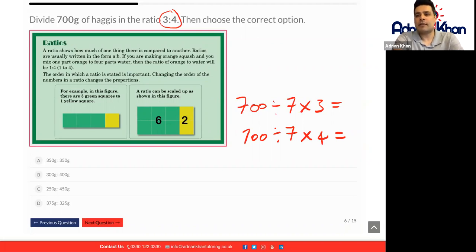So 700 divided by 7, which we know is 100, times by 3 is 300. 700 divided by 7 is 100 again, times by 4 is 400.